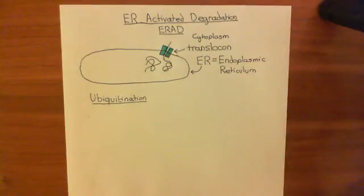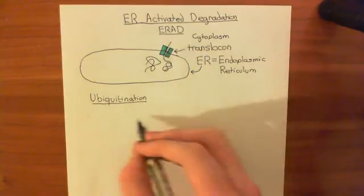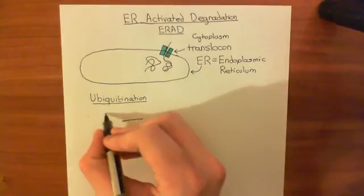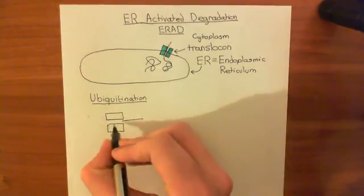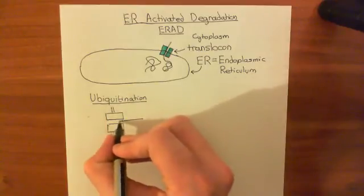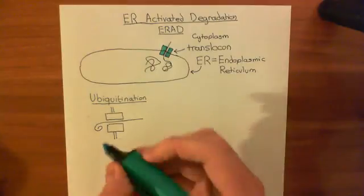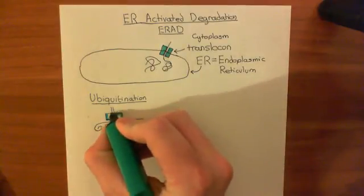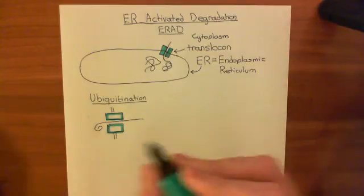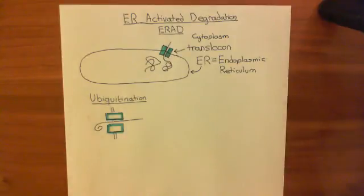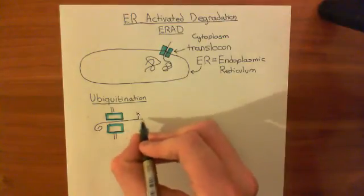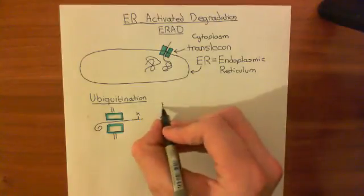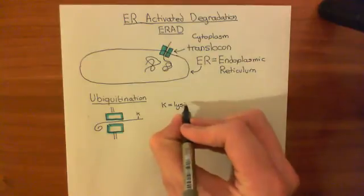We're now going to study the process by which ubiquitin is added onto lysine amino acids in this polypeptide. The polypeptide is coming out of the translocon, and this ubiquitination process occurs as it exits the endoplasmic reticulum. K is the single-letter code for the amino acid lysine, so when you see K, that just means lysine.